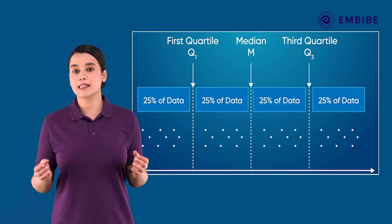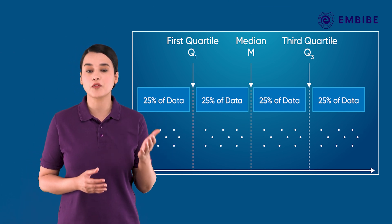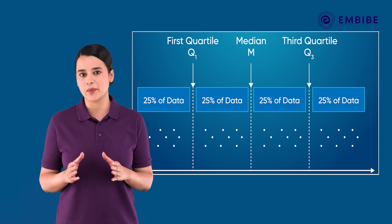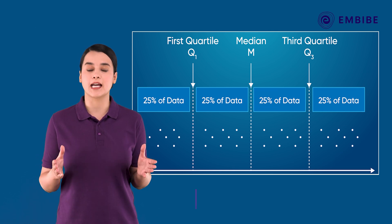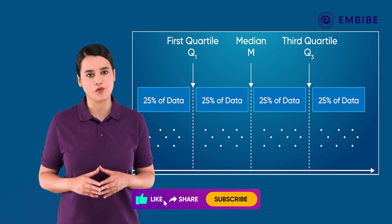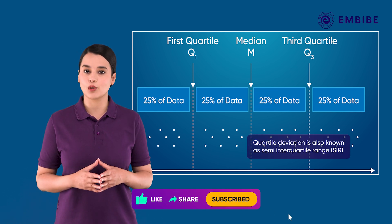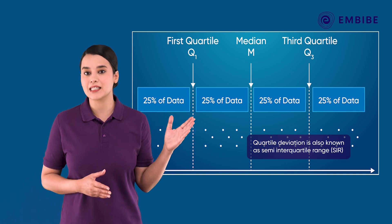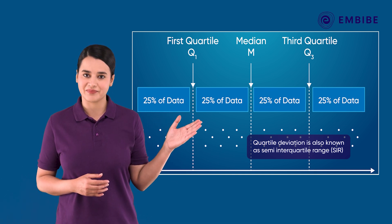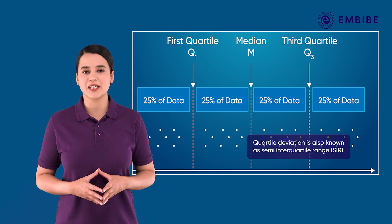A quartile is a statistical term that describes the division of observations into four defined intervals based on the values of the data and how they compare to the entire set of observations. The quartile deviation is also known as the semi-interquartile range, or SIR. Let's understand more about quartile deviation in this session.